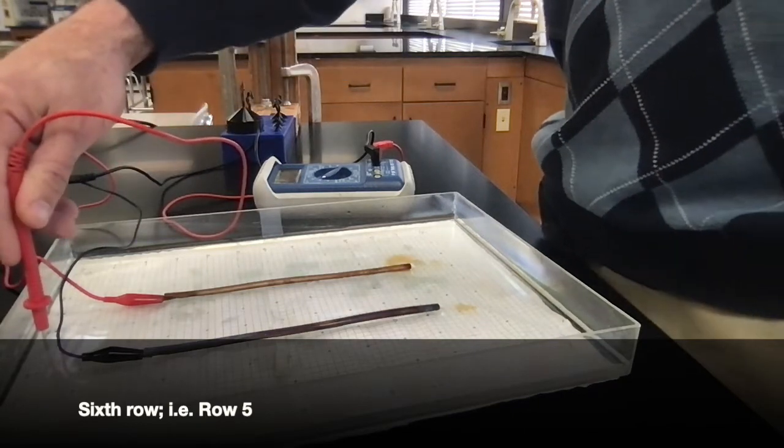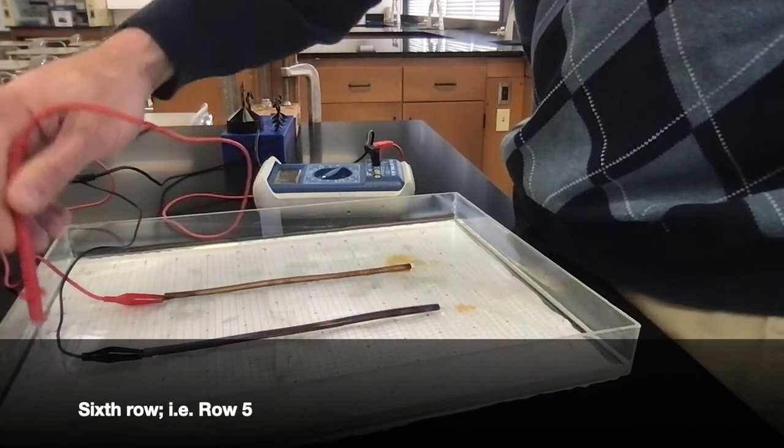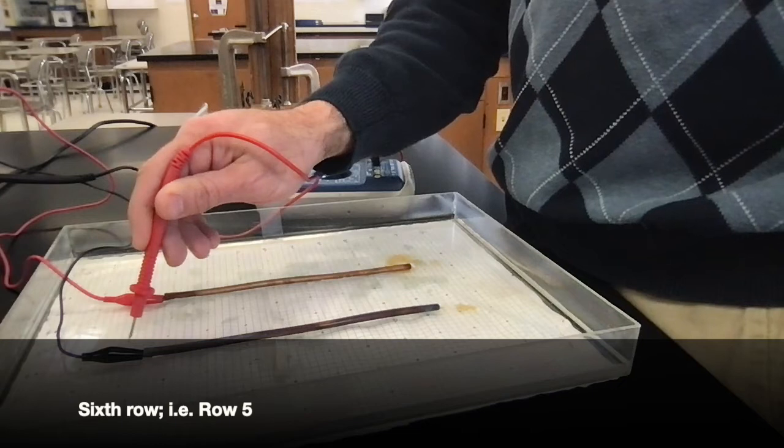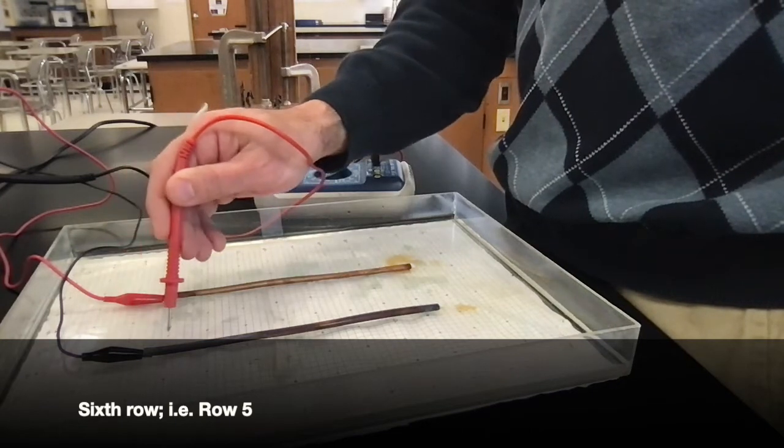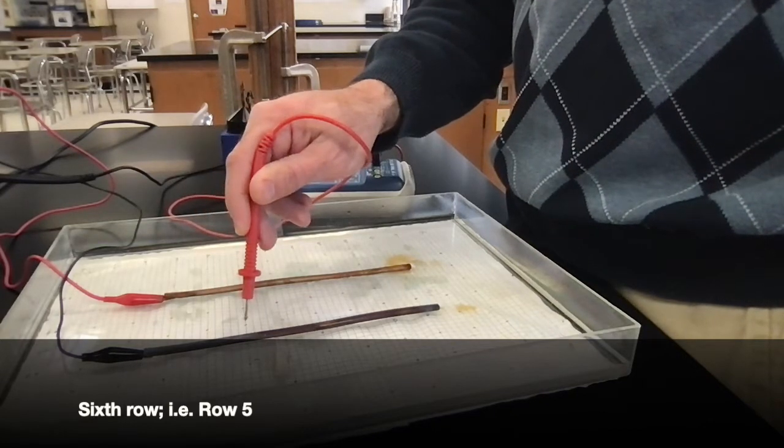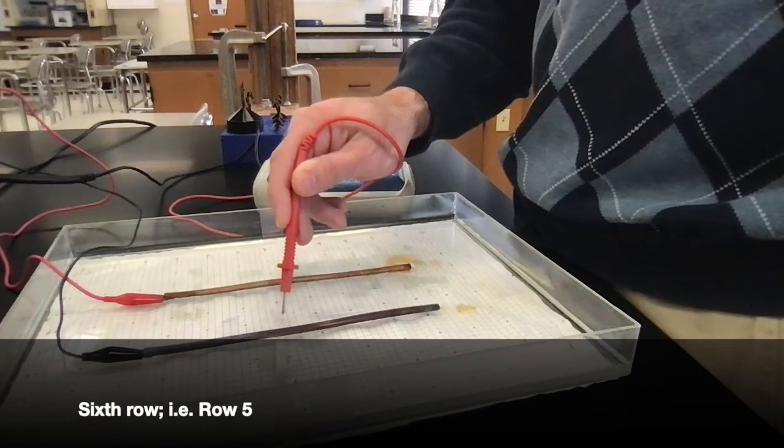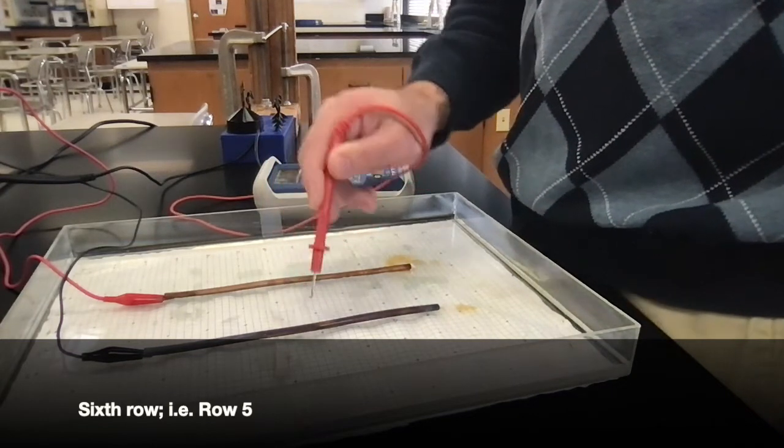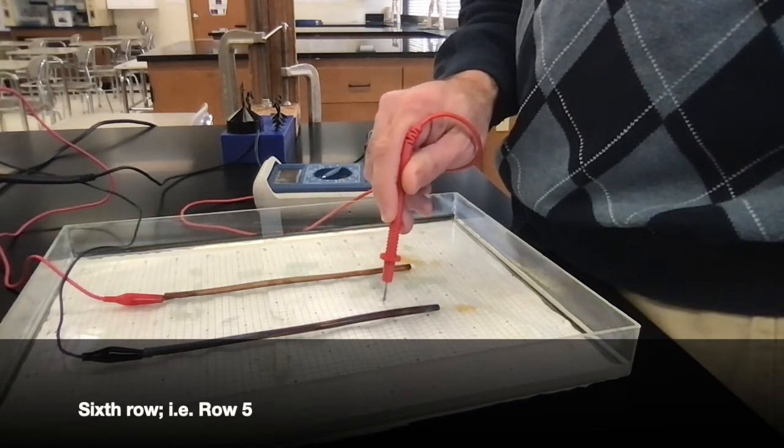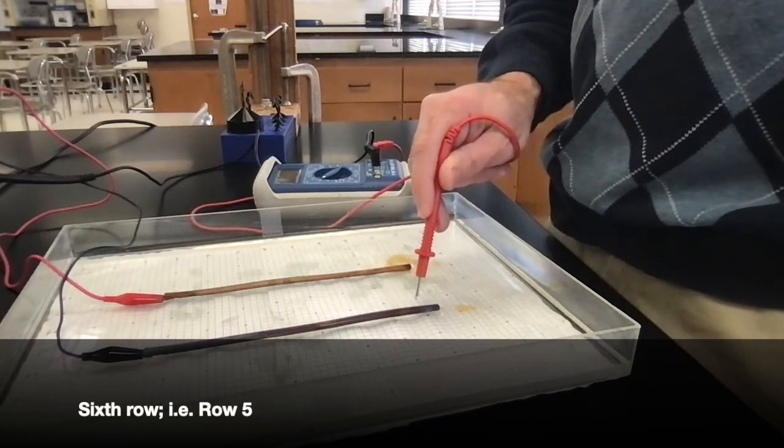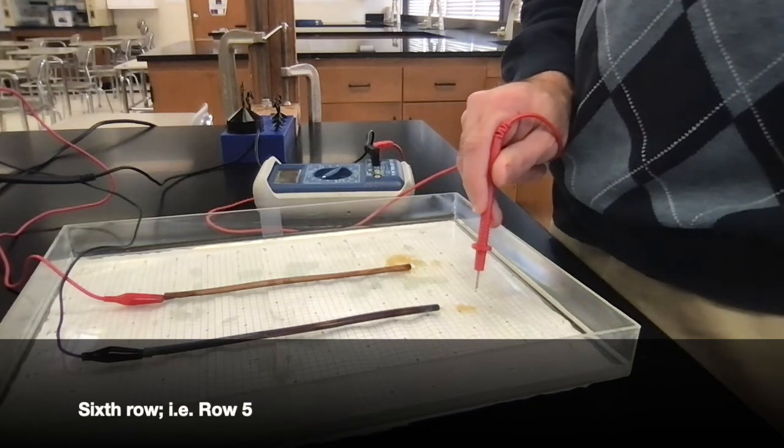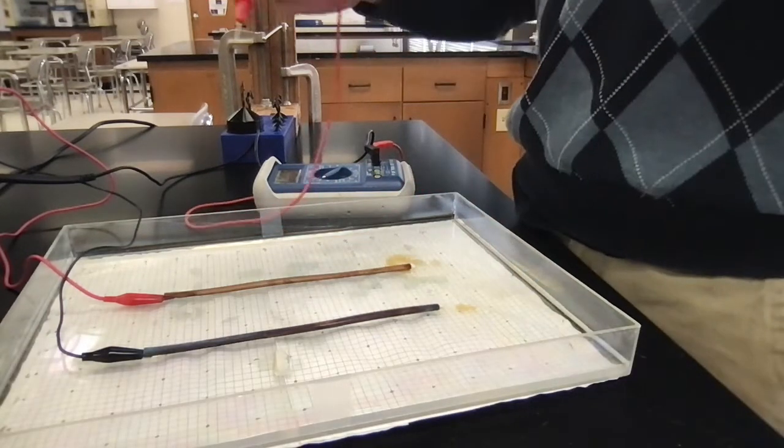First column labeled 0 is 4.6, 1 is 4.4, 2 is 4.1, 3 is 3.9, 4 is 3.8, 5 is 3.8, 6 is 4.0, 7 is 3.8, 8 is 3.7, 9 is 3.7, 10 is 3.9, 11 is 4.3, 12 is 4.9.